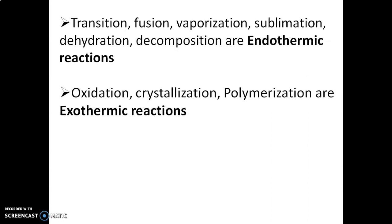Before discussing the differential thermogram of calcium oxalate, we need to study which reactions fall in the endothermic or exothermic category. Fusion, transition, vaporization, sublimation, dehydration, and decomposition are all endothermic reactions — meaning these reactions absorb heat from the sample, so the sample temperature is lower than the reference, and we get a downward curve. If the reaction is exothermic, the sample experiences more temperature than the reference, so we get an upward curve. Examples of exothermic reactions include oxidation, crystallization, and polymerization.